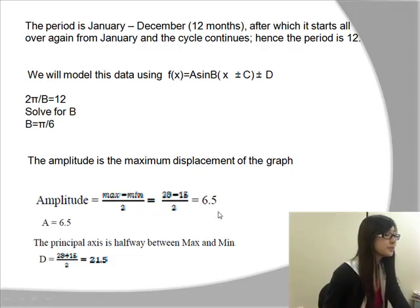So in this case, it will be 28 minus 15 divided by 2, and we get 6.5. Therefore, the amplitude will be 6.5.